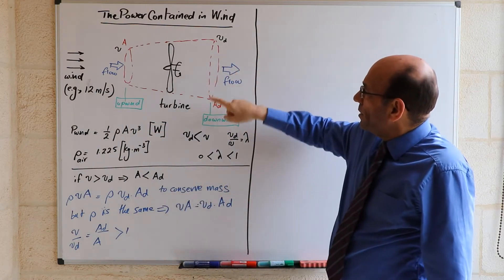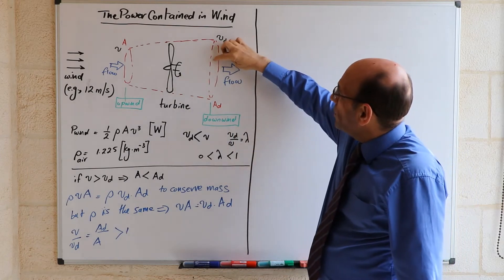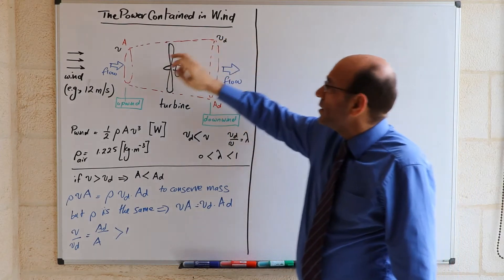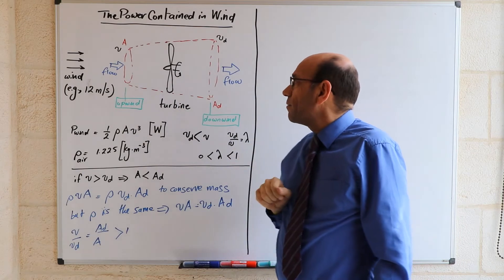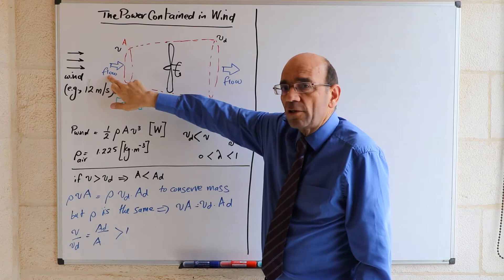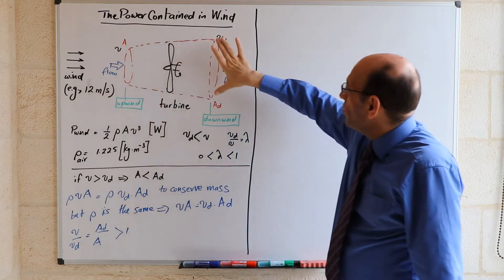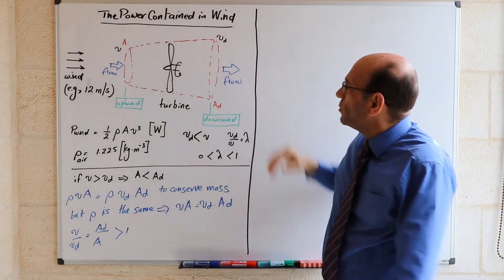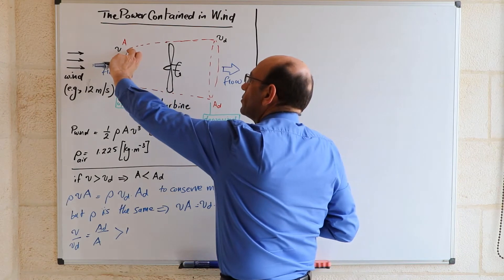And you will also notice in this diagram that the cross-sectional area at this point is larger than the cross-sectional area at this point. And there's a good reason for that, because we will assume that the flow of air at this point should be equal to the flow of the air at this point. So the flow of air through this cross-sectional area,